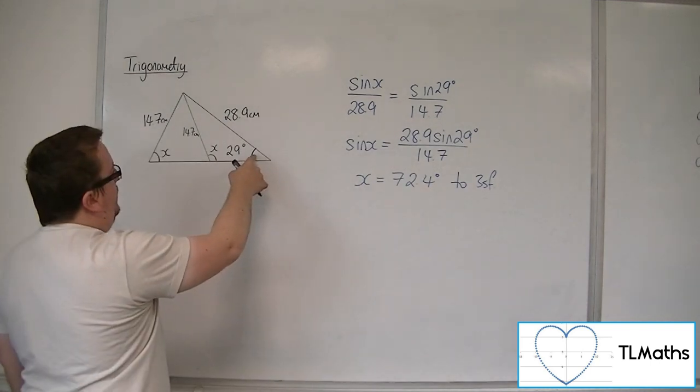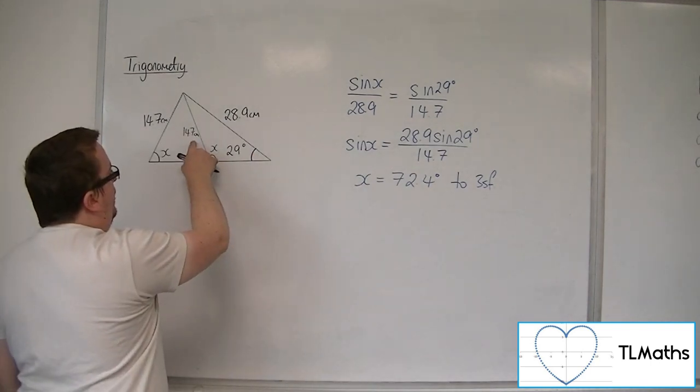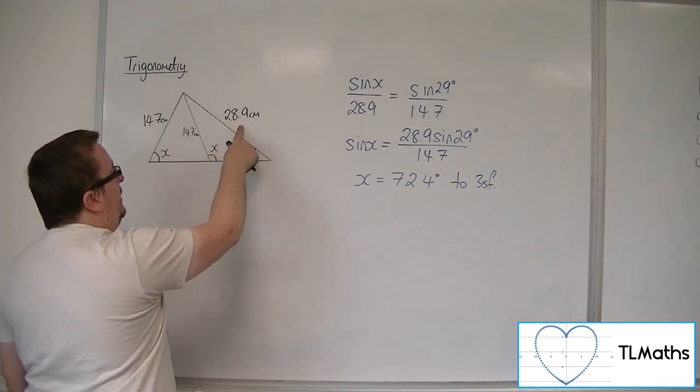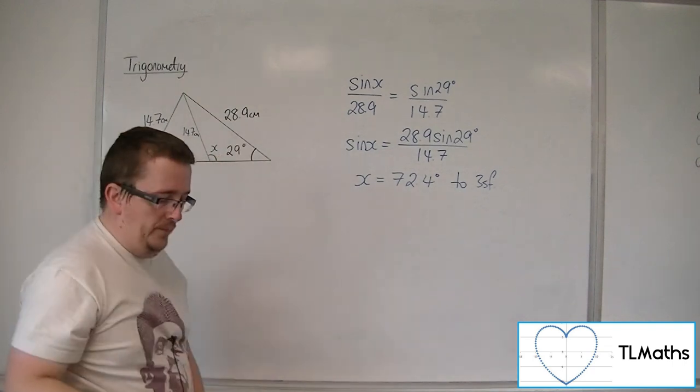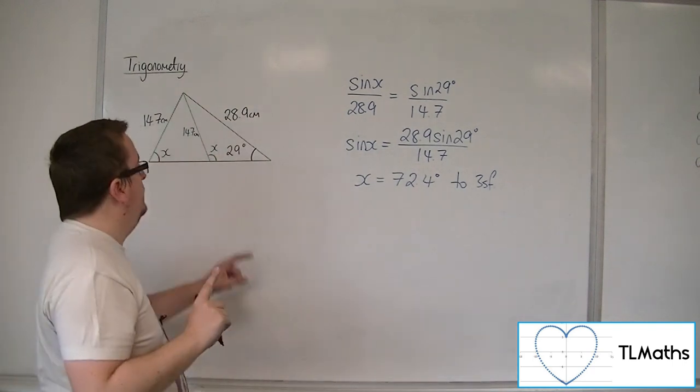There's my 29 degrees. There's the opposite side of 14.7 centimeters. There's that length of 28.9 centimeters, and I want to find the opposite angle. But the opposite angle is obtuse.